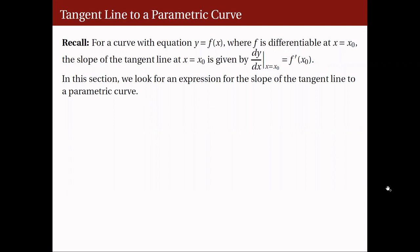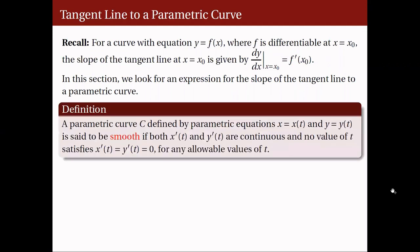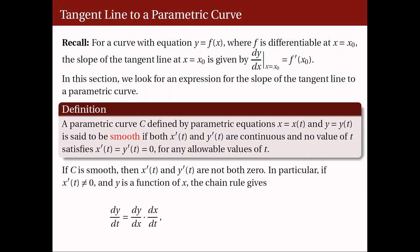Let's first define a smooth parametric curve. A parametric curve C, defined by the parametric equations x equals x of t and y equals y of t, is said to be smooth if both x prime of t and y prime of t are continuous, and x prime of t and y prime of t are not both zero at the same time. Therefore, if C is smooth, then x prime of t and y prime of t are not both zero.